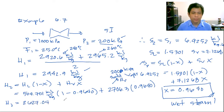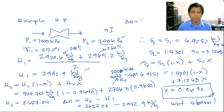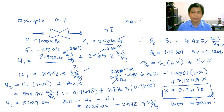Now we can calculate delta H. Delta H = H2 - H1 = 2,627.04 - 2,942.9 = -315.86 kJ/kg.